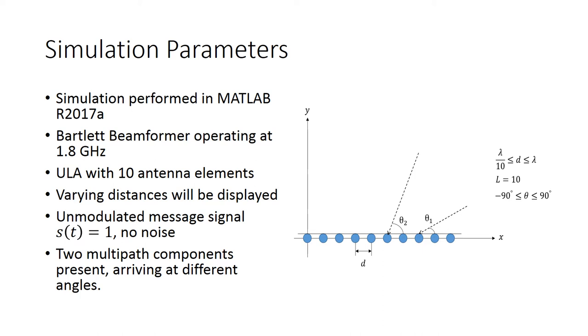With two multipath components, the array output can be written as a superposition of steering vectors, with an unmodulated message signal equal to 1 and no noise present. The Bartlett beamformer, in this case, operates at 1.8 GHz.